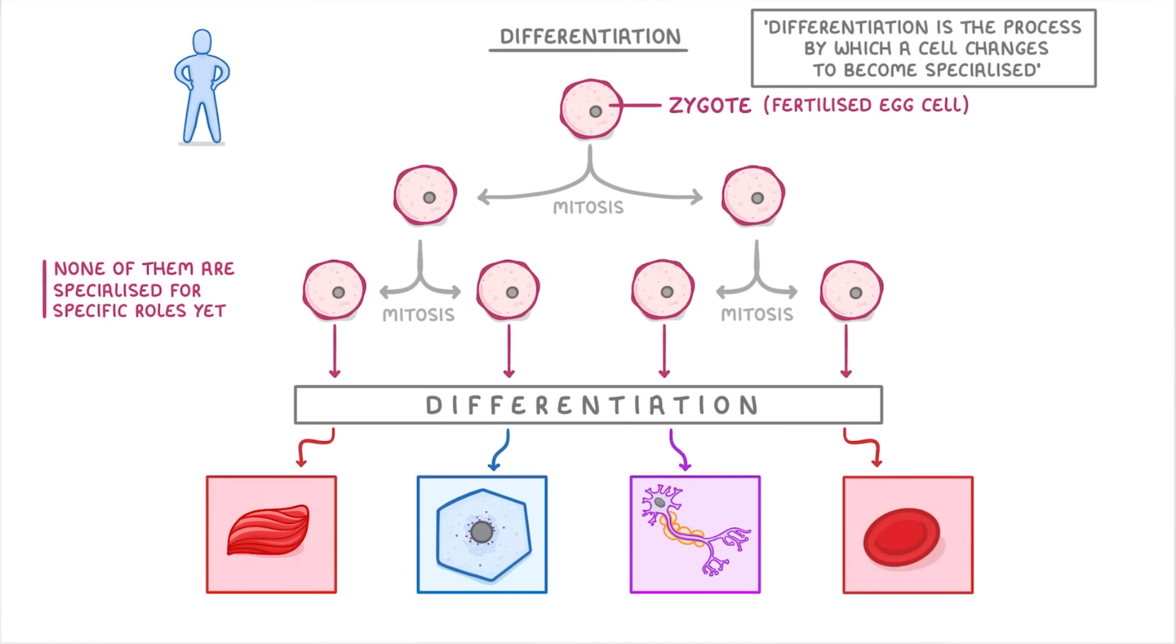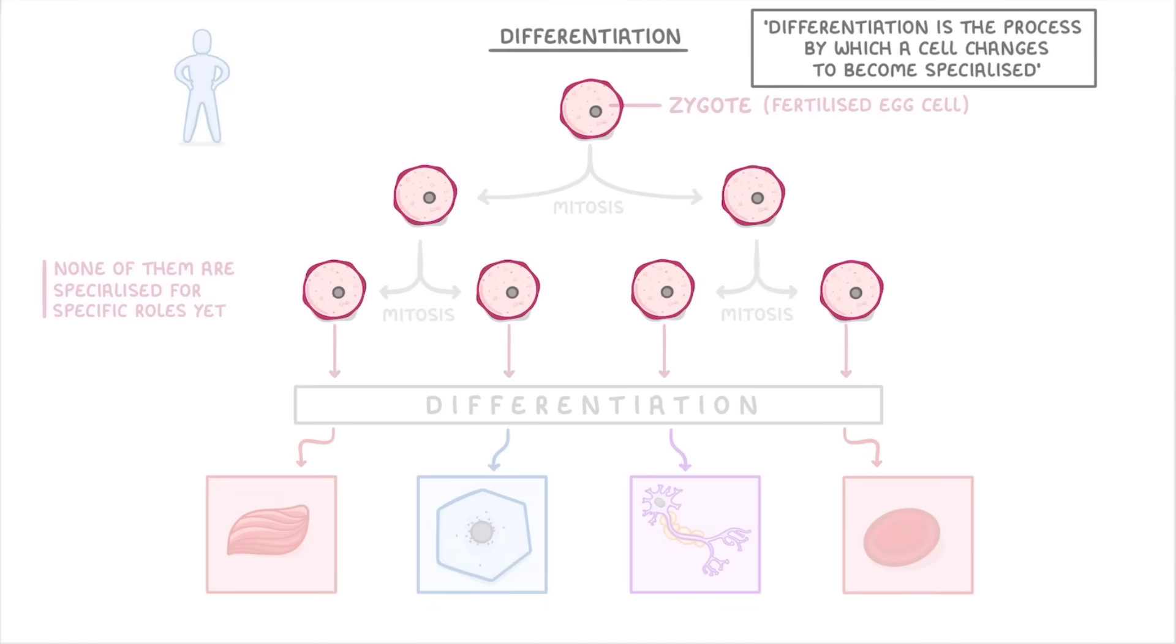One very last thing to say is that cells like these ones in the middle, that have the ability to repeatedly divide by mitosis and to differentiate into different types of specialized cells, are called stem cells. And we'll take a closer look at these in another video.